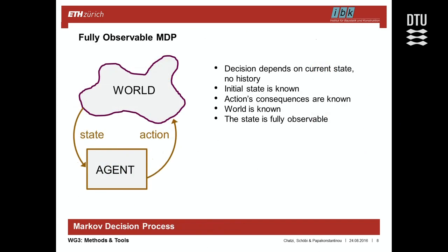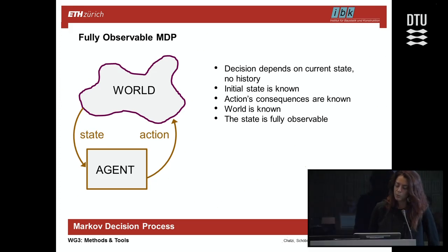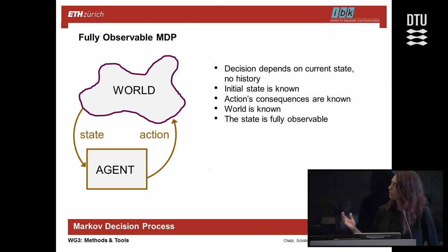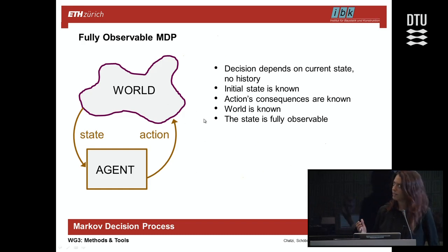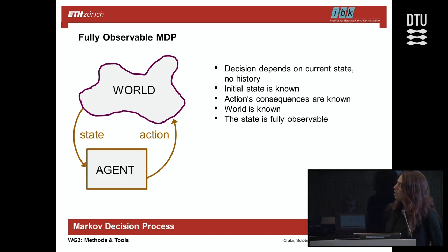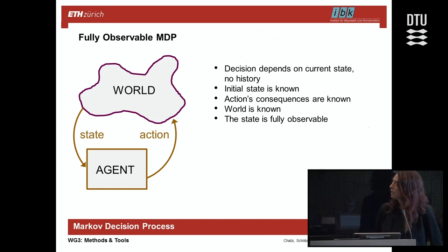In solving this decision-making problem — deciding upon a strategy — we could look at it as a classical Markov Decision Process, where we have a system or environment at a given state and an agent that seeks to take an action whose results are uncertain. Once this action is taken, the agent receives the reward.